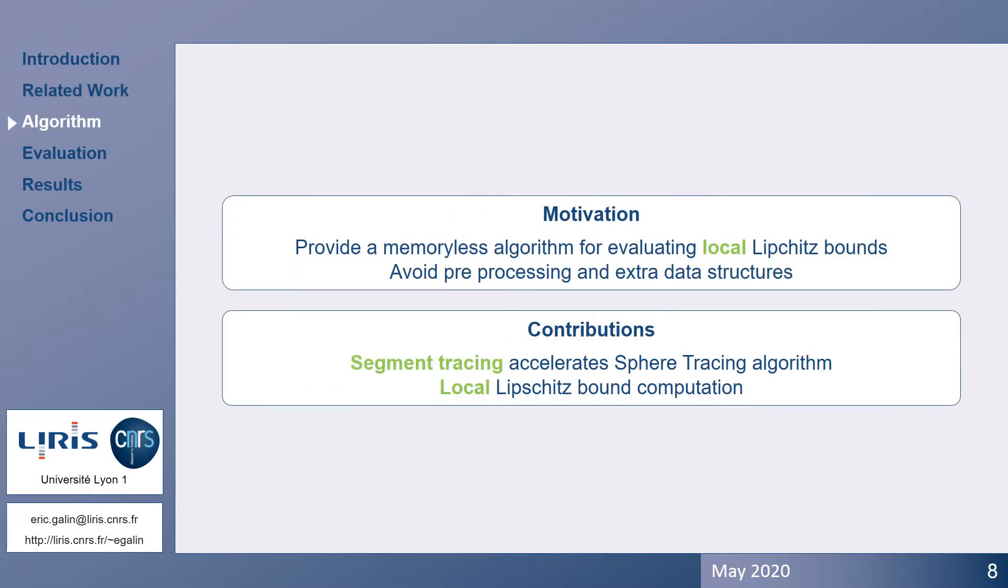The motivation of this work is to provide a memory-inexpensive algorithm for evaluating local Lipschitz bounds on the fly. Our approach takes advantage of the hierarchical and procedural definitions of the implicit surface. We evaluate the Lipschitz bounds locally at every step of the marching process over a candidate step segment. Our method yields tighter Lipschitz bounds, which in turn allows for longer steps and significantly reduces the number of iterations.